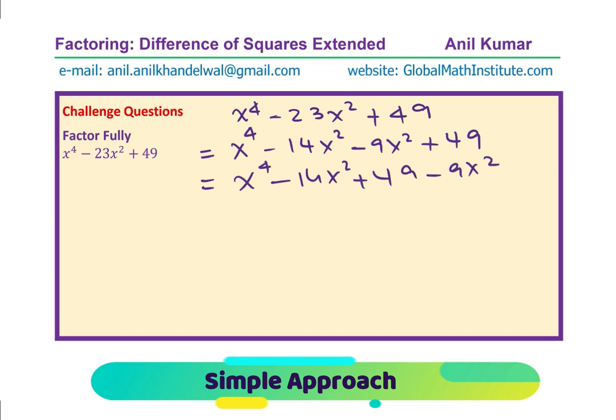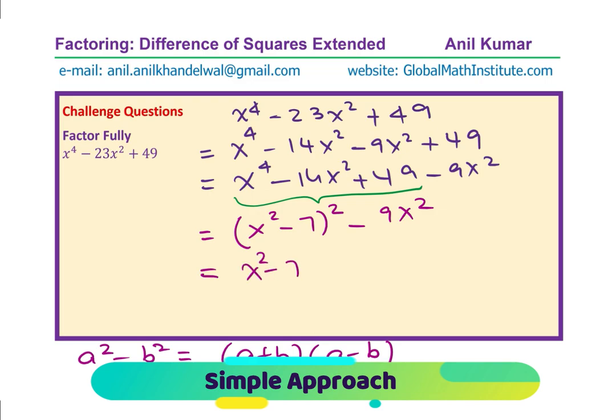The three terms which we are talking about are these and they can be written as a perfect square: x to the power of 4 minus 7 whole square, and then we have minus 9 x square. Now we have difference of square. Now we have difference of squares. I hope you remember what is a square minus b square which is a plus b times a minus b.